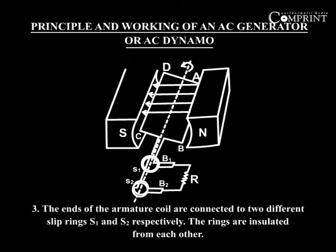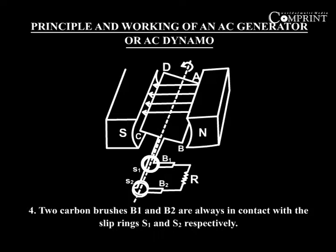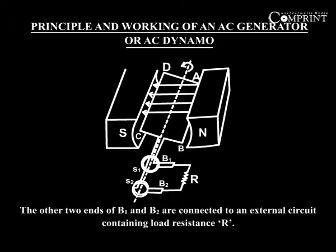The rings are insulated from each other. These rings rotate along with the armature about the same axis as that of the coil. Two carbon brushes B1 and B2 are always in contact with the slip rings S1 and S2 respectively. The other ends of B1 and B2 are connected to the external circuit containing low resistance R.